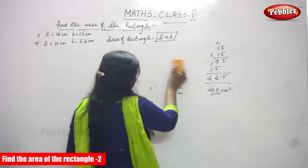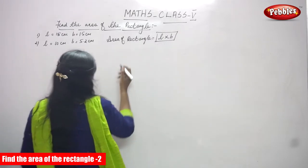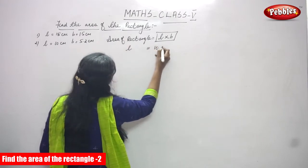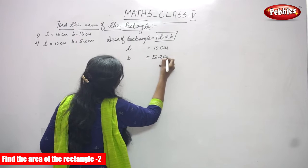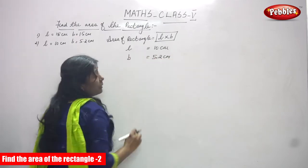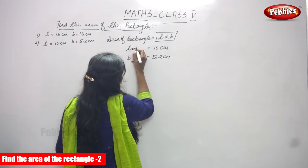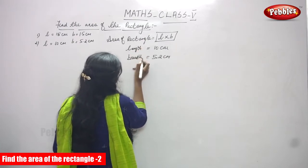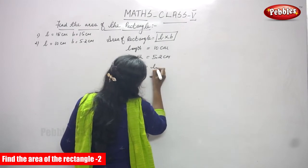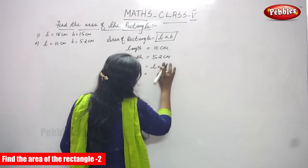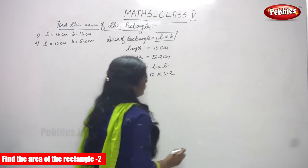Now the next problem. We apply the same formula. Length L is equal to 10 centimeters and breadth is equal to 5.2 centimeters. Here also we multiply a whole number with a decimal number. The formula is area A = L into B — where L is length and B is breadth. Substituting the values: L = 10 and B = 5.2.